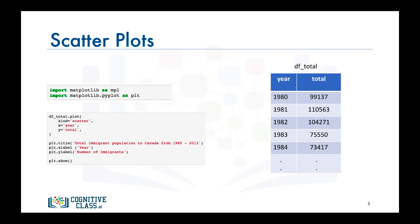In this case, we're passing column year as the x parameter and column total as the y parameter. Then, to complete the figure, we give it a title and we label its axes. Finally, we call the show function to display the figure.